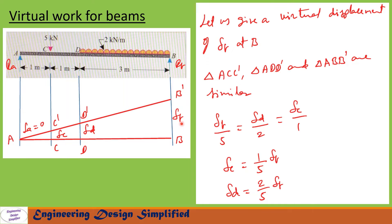To find reaction at B (RB), let us give a virtual displacement of delta B at B, so the beam will assume the position A, C prime, D prime, and B prime. Here we have three similar triangles: A-C-C prime, A-D-D prime, and A-B-B prime. From A to B is 5 meters and displacement is delta B; from A to D is 2 meters and displacement is delta D; from A to C is 1 meter and displacement is delta C.